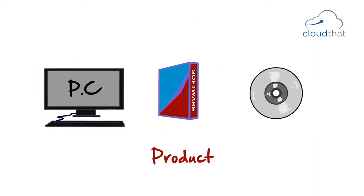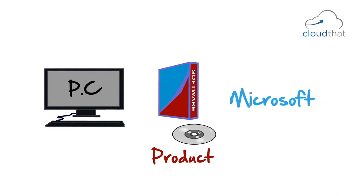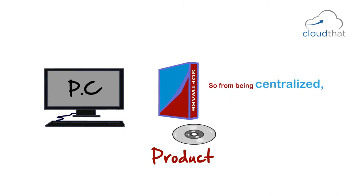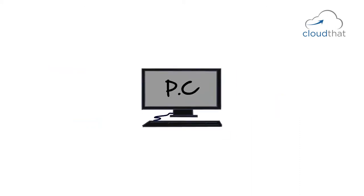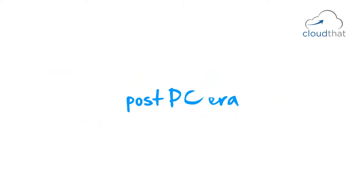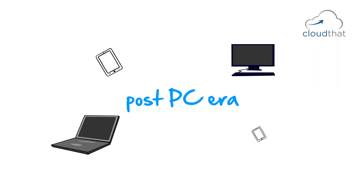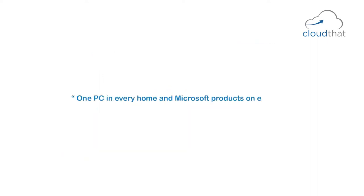PCs made software into a product — software was now sold on CDs. Microsoft made a fortune doing just that. So from being centralized in the mainframe world, software became a product in the PC world, with the client responsible for managing it. From the PC era, we moved on to the current era, mostly called the post-PC era. One characteristic of post-PC is a range of devices. Microsoft's golden statement many years ago was 'one PC in every home and Microsoft products on each PC' — but today, every home has multiple computers: a desktop, a laptop, smartphones, tablets, etc.